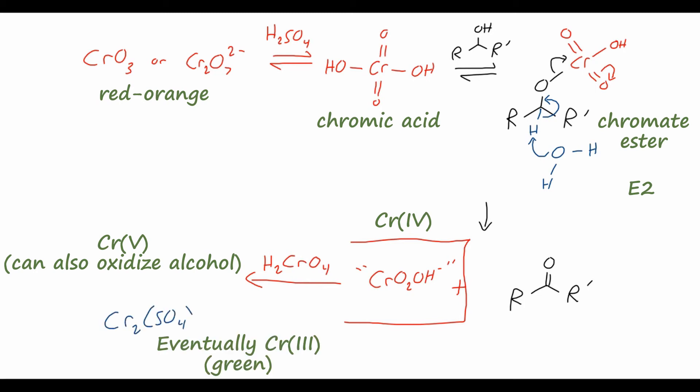In this case, we can write chromium-3 sulfate. Chromium-3 compounds have a very characteristic dark green color, which is very convenient, because we can tell when the reaction has reached completion by the disappearance of that red-orange chromium-6 compound and the appearance of a green chromium-3 salt. So that is the formation of our ketone, where both R and R prime are carbon atoms.